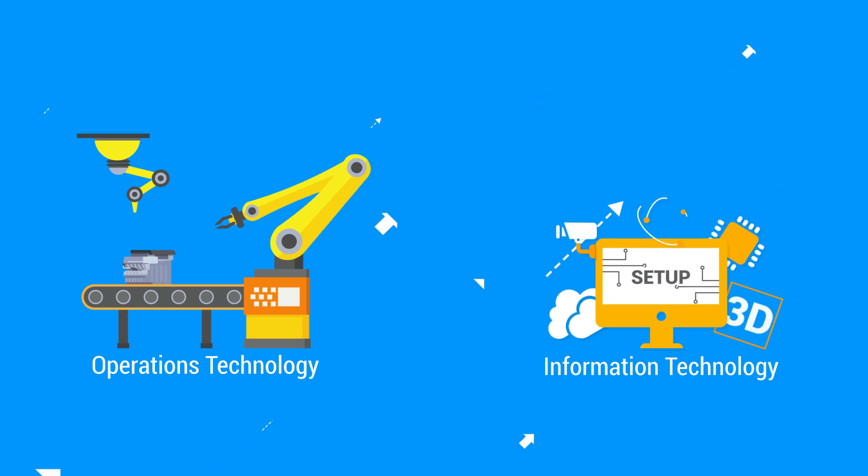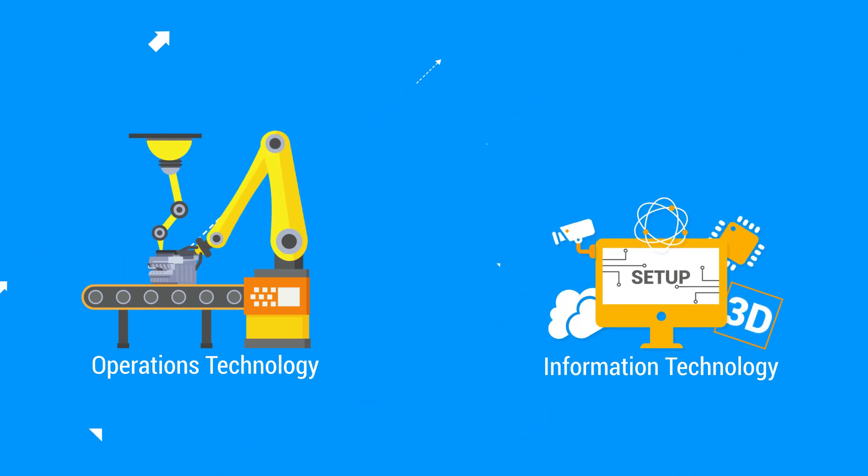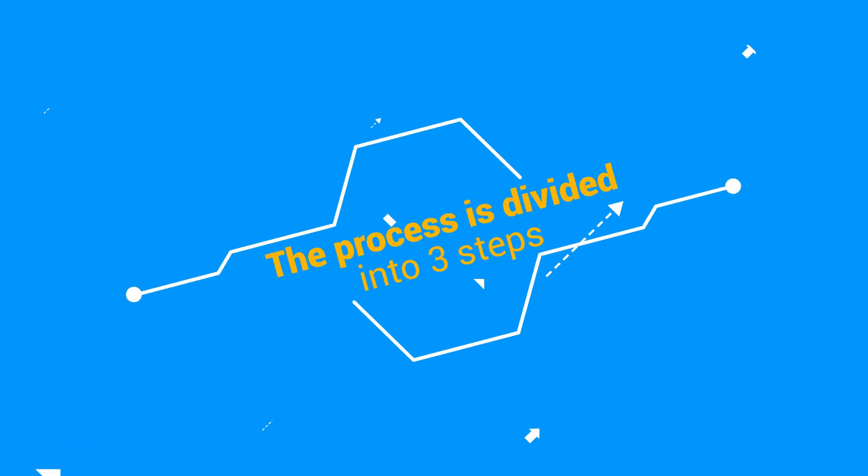To address it, collaboration between teams from operations technology, equipment, and machines, and teams from information technology, software, and hardware is established. The process is divided into three steps.